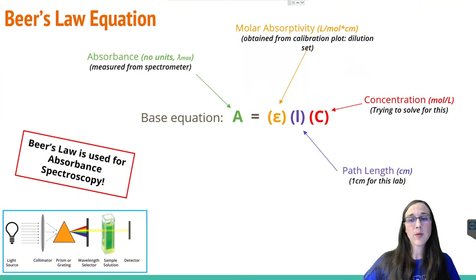For our purposes here, we're going to assume that the path length of the cuvette in centimeters is going to be one centimeter for this particular lab, and for many labs, the cuvette happens to be one centimeter in path length that the light is traveling through.